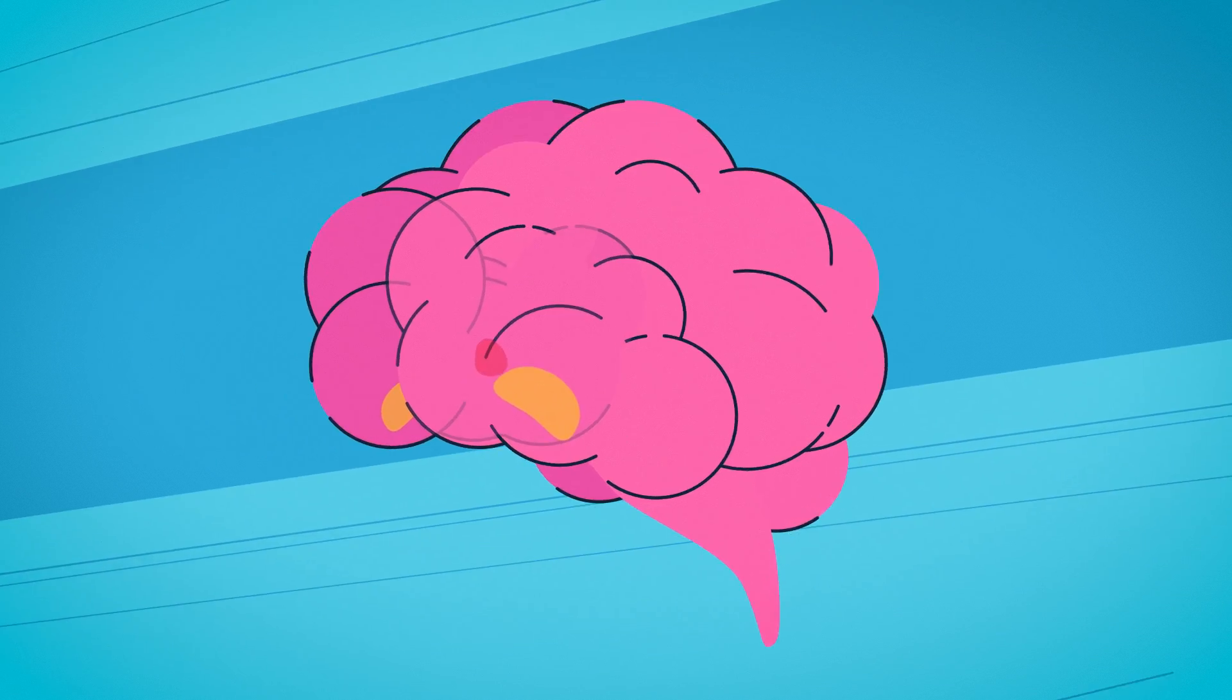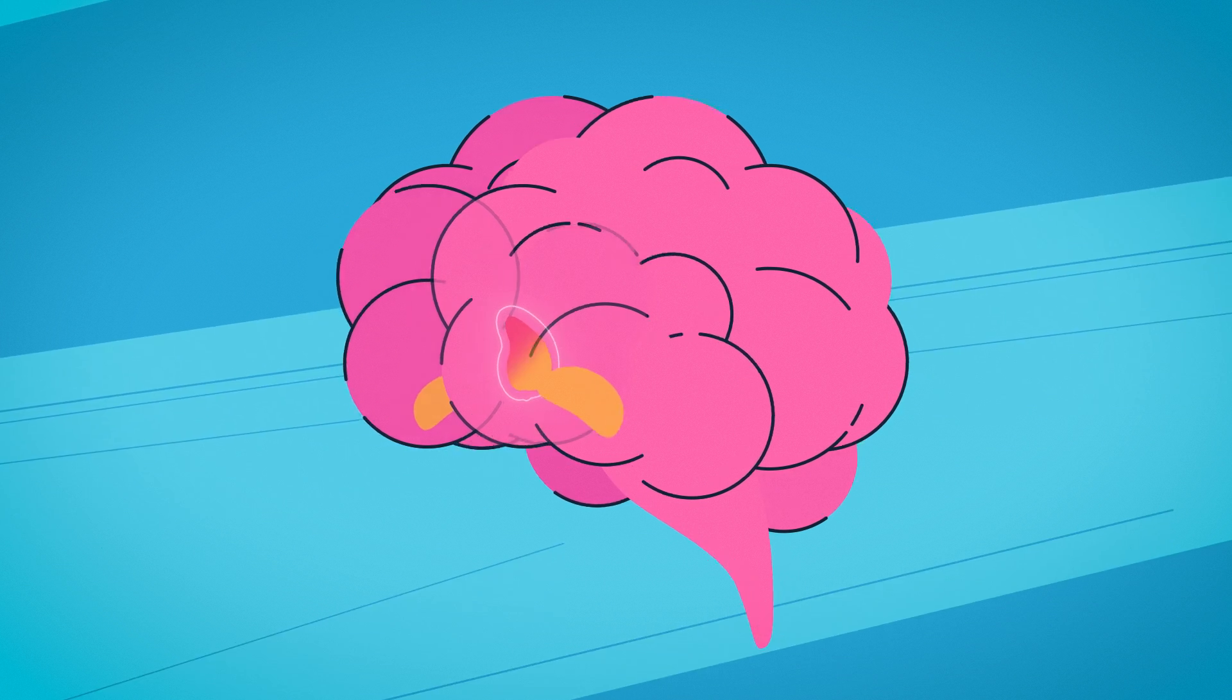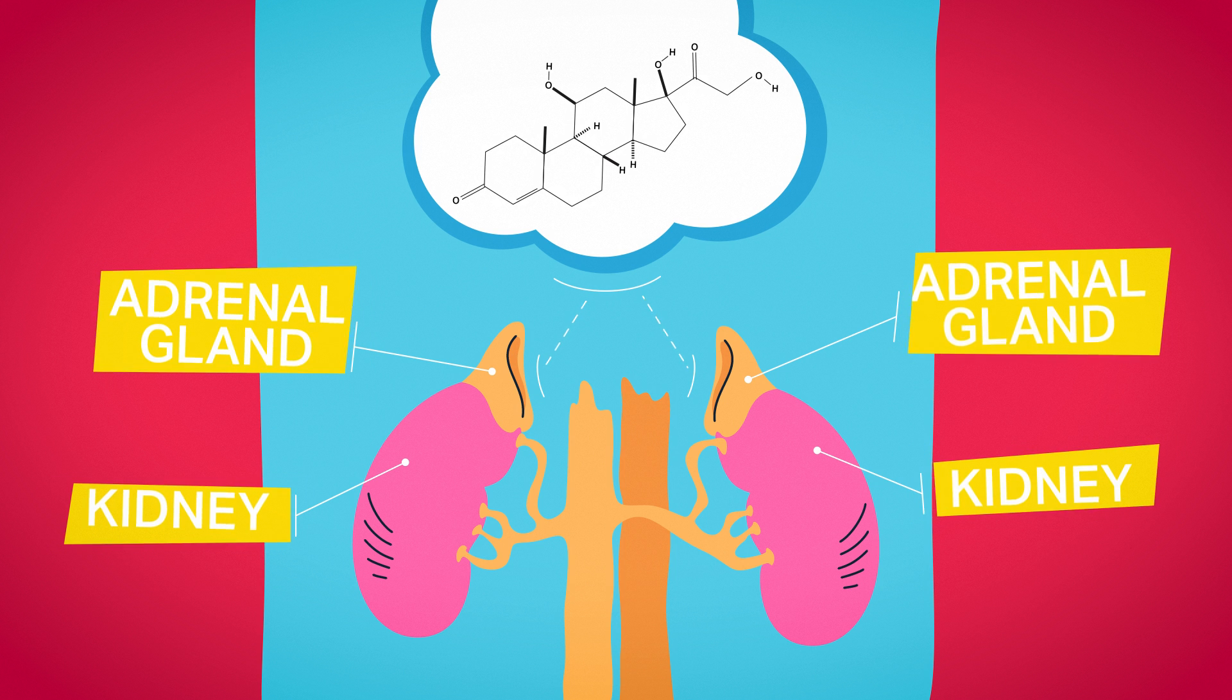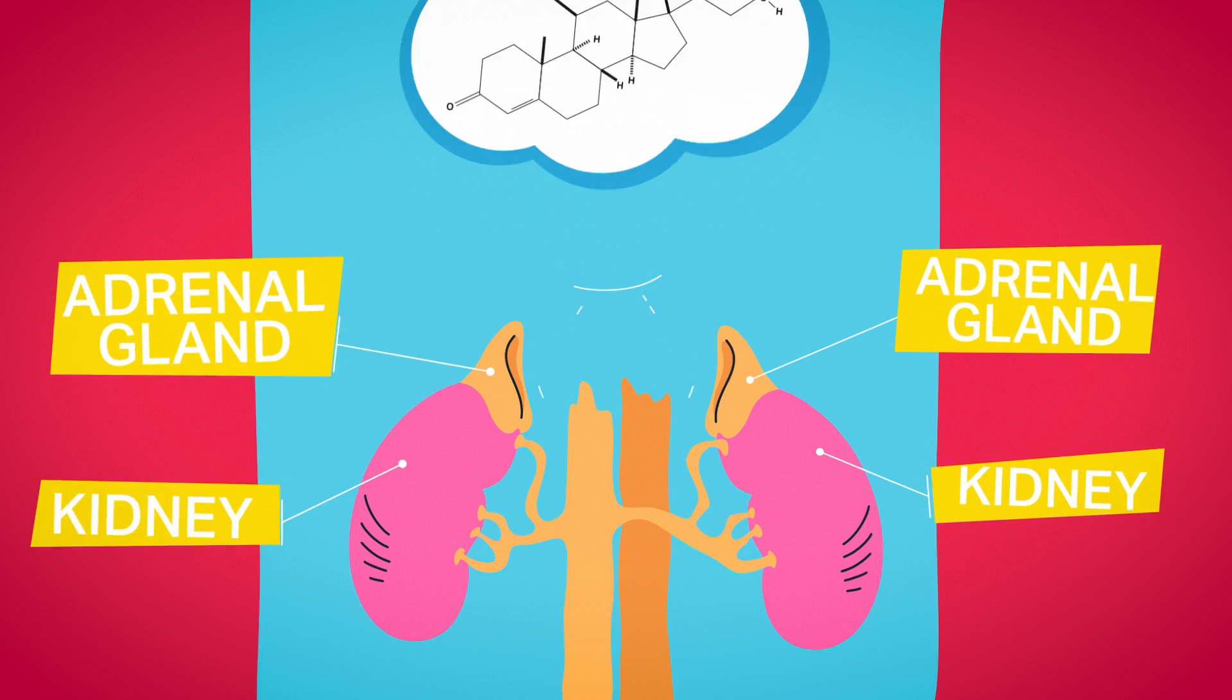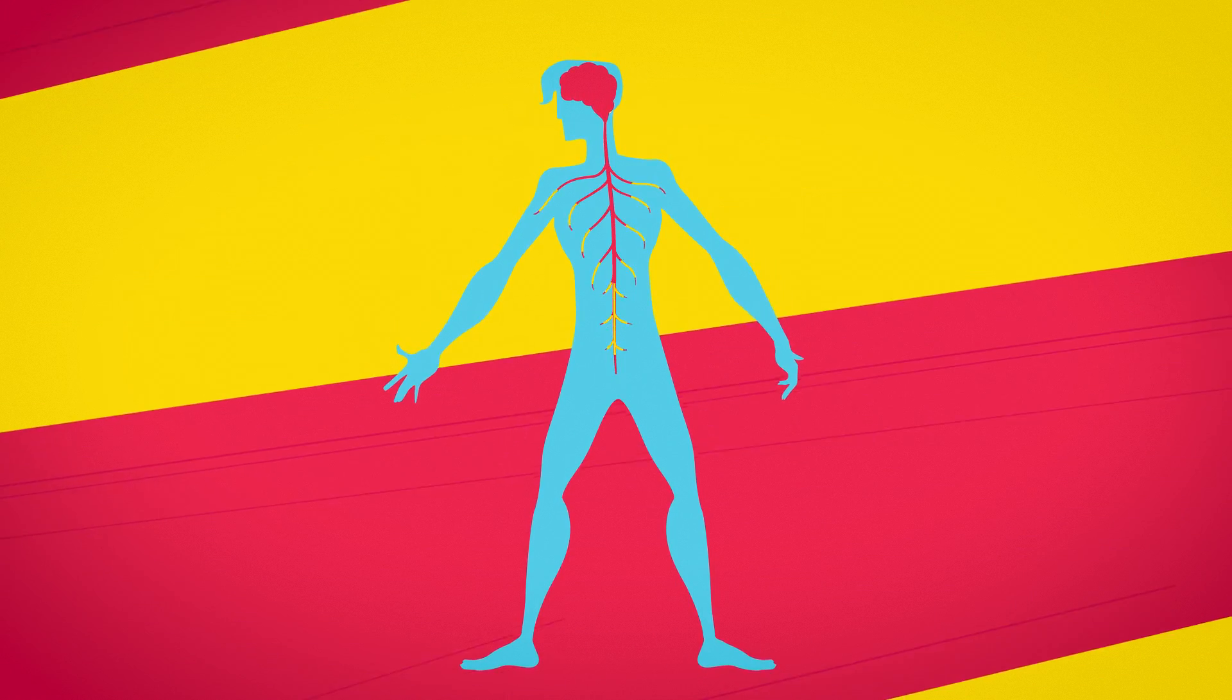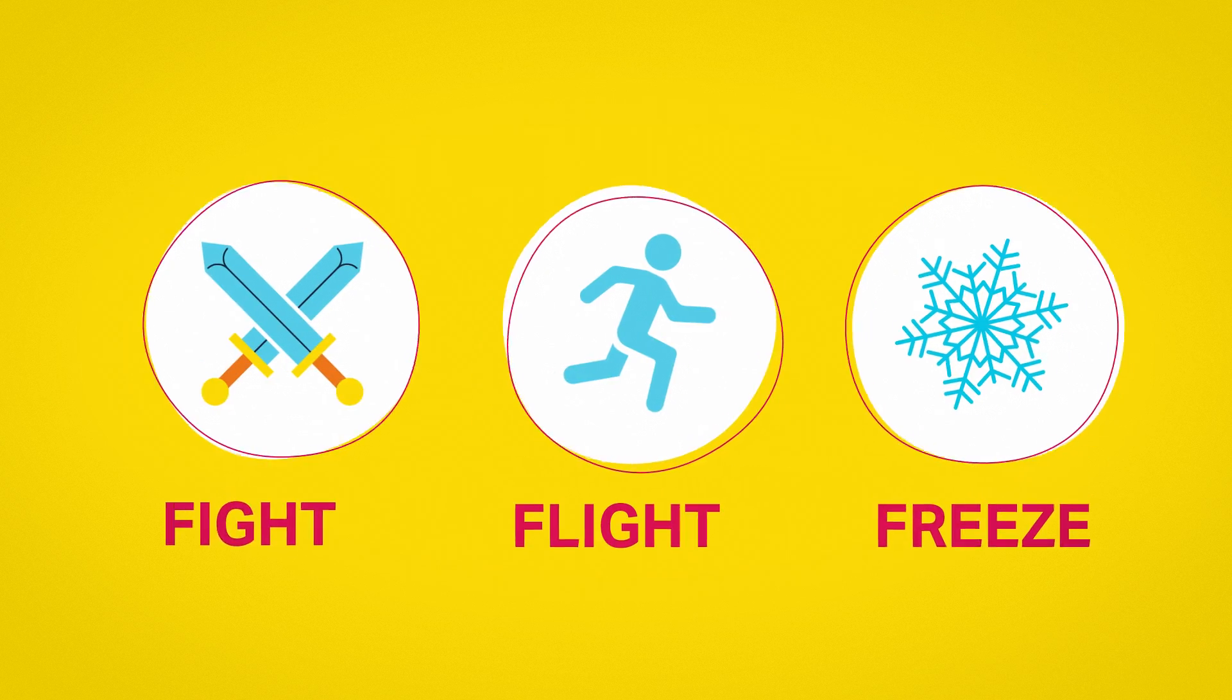The amygdala can send a signal to a brain region called the hypothalamus, telling it to release cortisol, the stress hormone, which activates the sympathetic nervous system and signals the body to respond to the stressor.